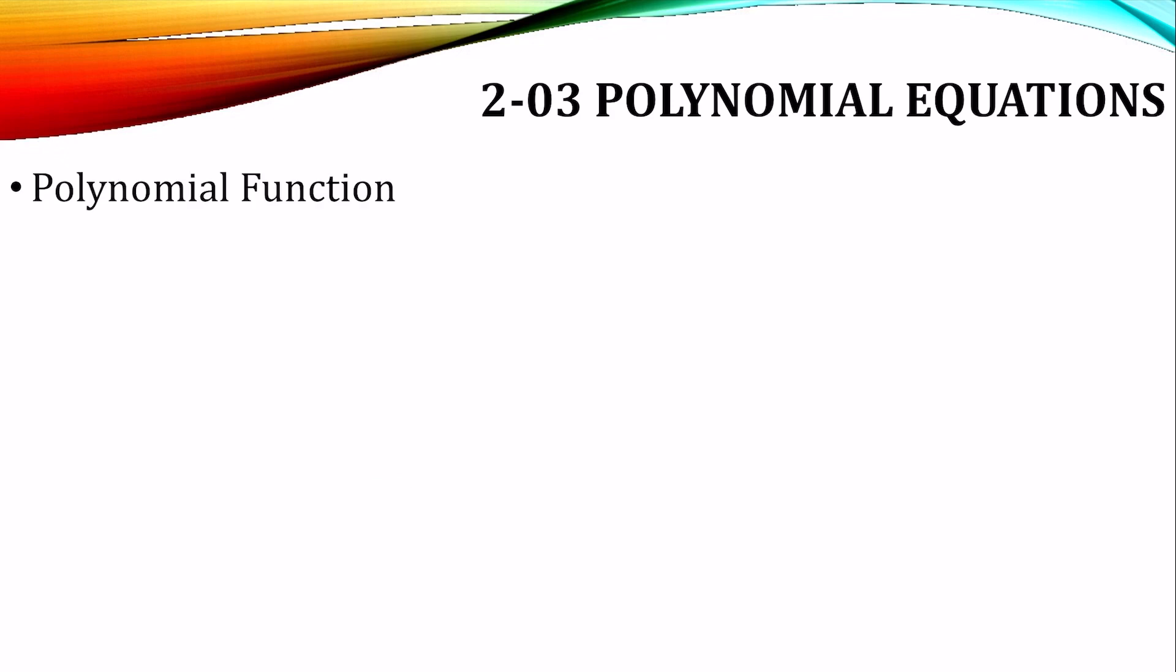The polynomial function is in the form of that. Notice all these aₙ's, they're all coefficients - numbers multiplied by the variable.